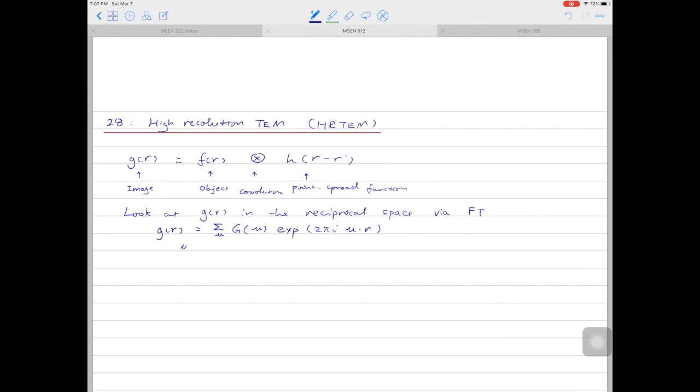Where u is something we call the reciprocal lattice vector. And if we Fourier transform g(r), the small g, we will get the capital G(u).